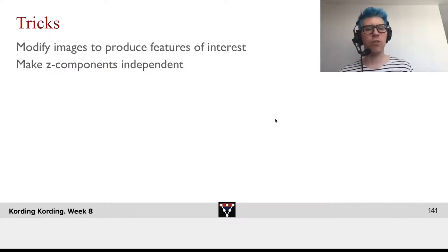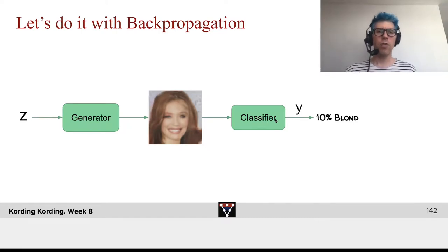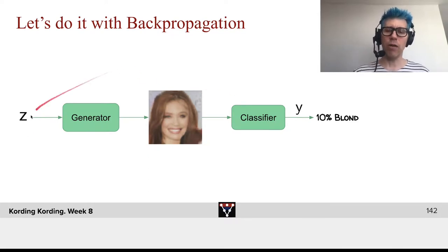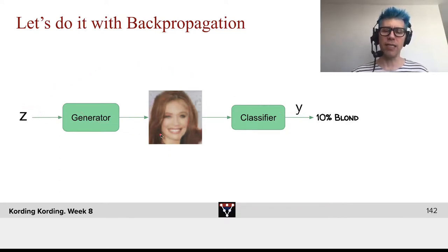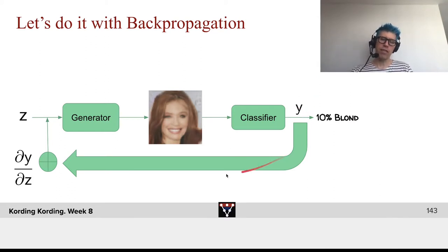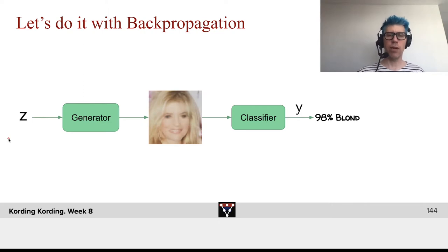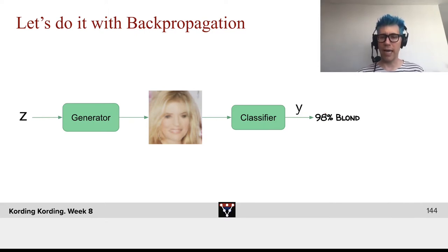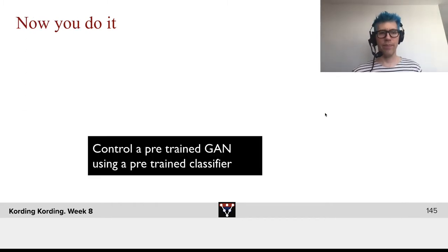So what are the tricks? We will modify images to produce features of interest and we'll try to make the Z components independent. It turns out that we can do a lot of these things with backpropagation. We have a generator, and now we have a classifier for the features we're interested in. Z goes in, the generator draws a face, the classifier runs on this and says the probability that this image is actually blonde might be 10%. Then we can use feedback from the output of the classifier to go down the gradient in Z space — basically, how can we change this so that this image gets to be more blonde? After doing that, we might get that this person is now predicted to be blonde with high probability. Now, why don't you try it? Control a pre-trained GAN using a pre-trained classifier.